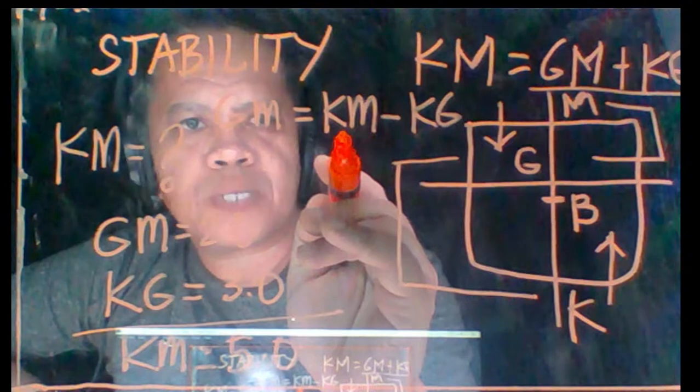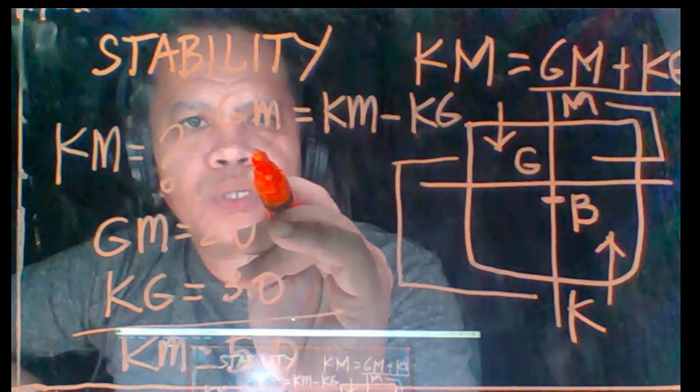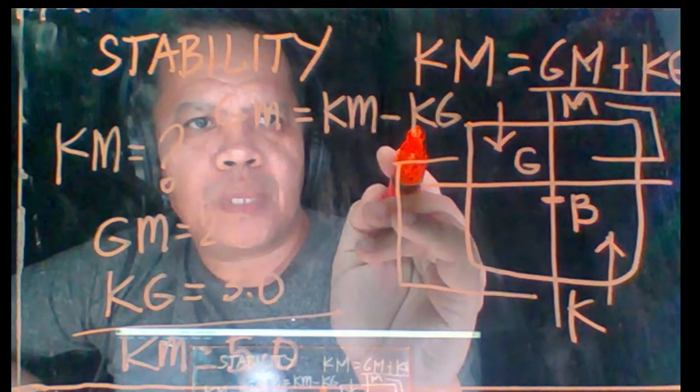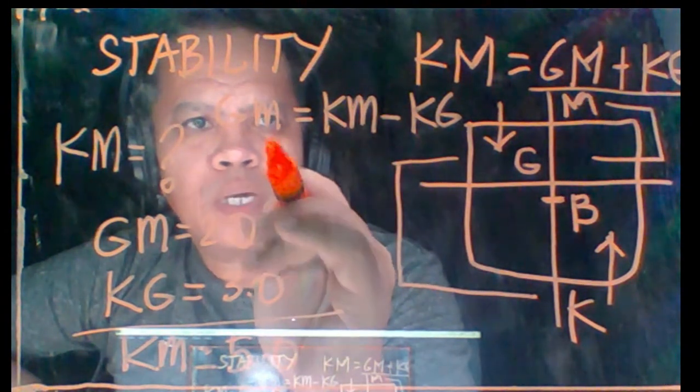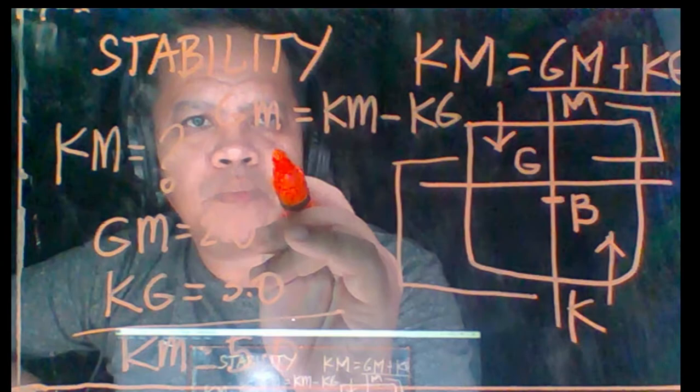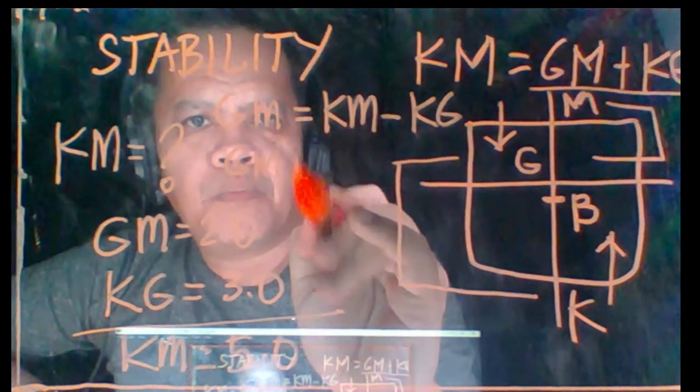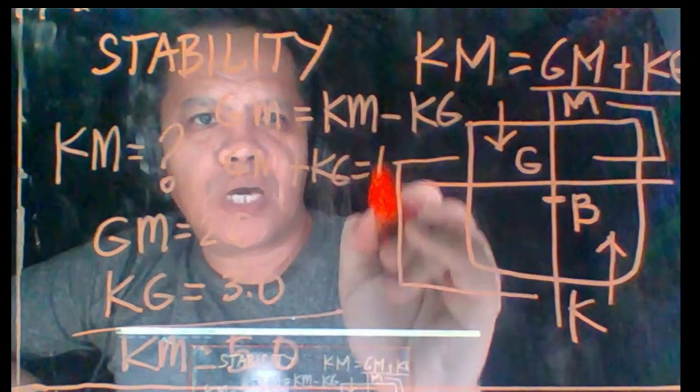If you transpose, this is positive. If you transpose, this one negative. If you transpose, it becomes positive. So it could be GM plus KG equals KM.